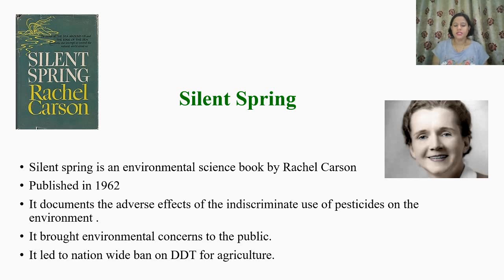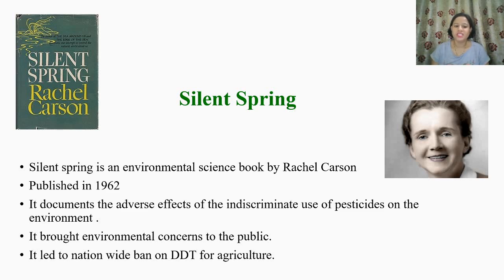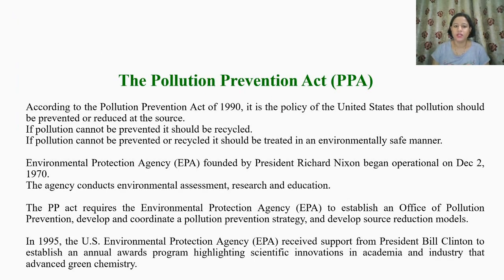In 1962, Rachel Carson published a book titled Silent Spring, which is an environmental science book. Her book documented the adverse effects of the indiscriminate use of pesticides on the environment. This book brought environmental concerns to the public and led to a nationwide ban on DDT for agriculture.